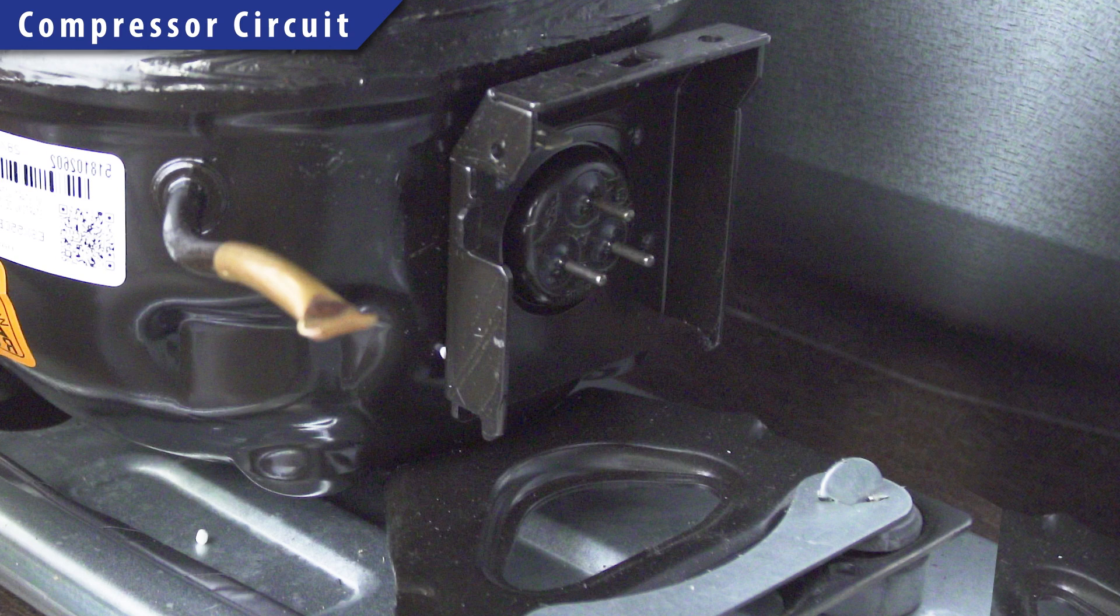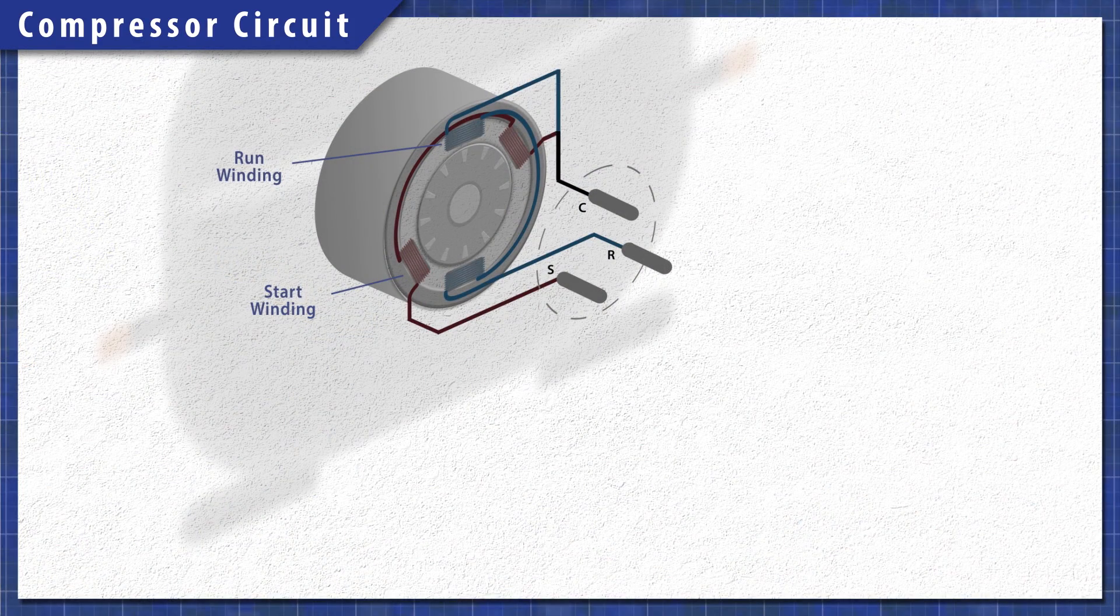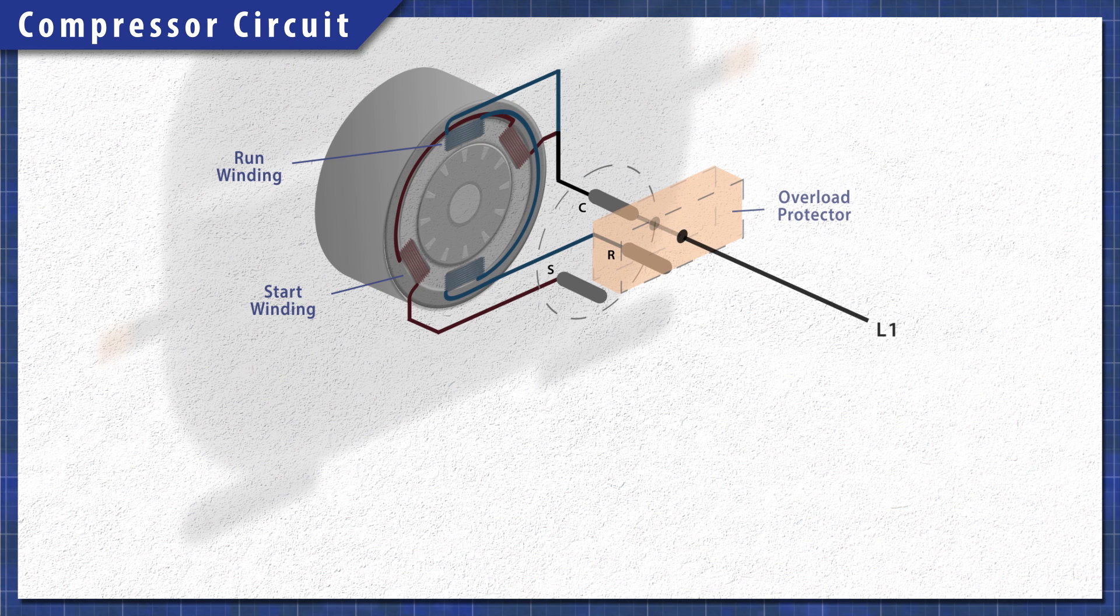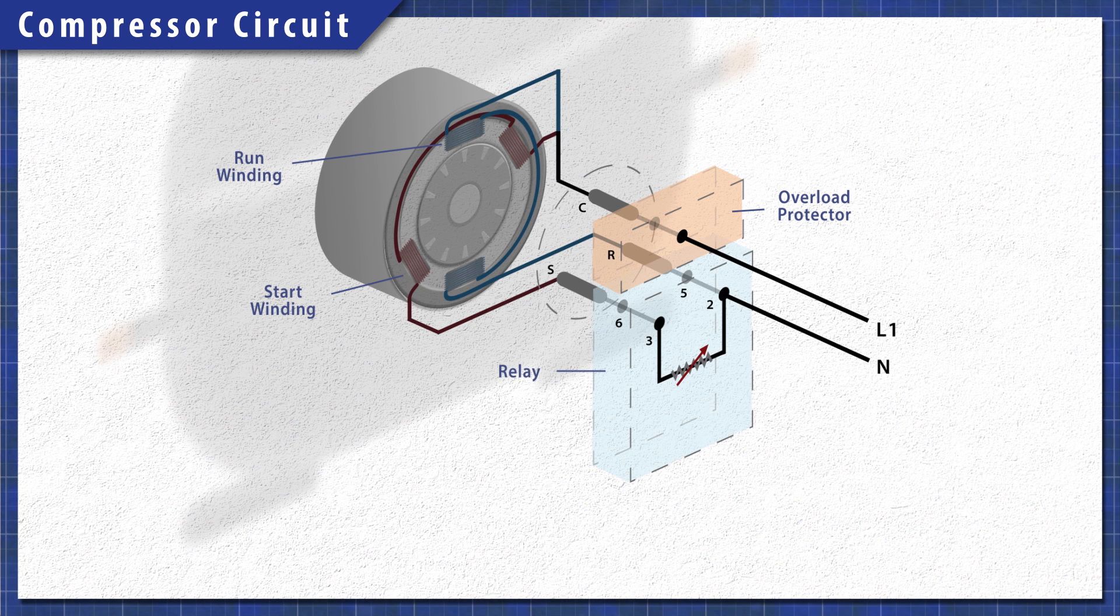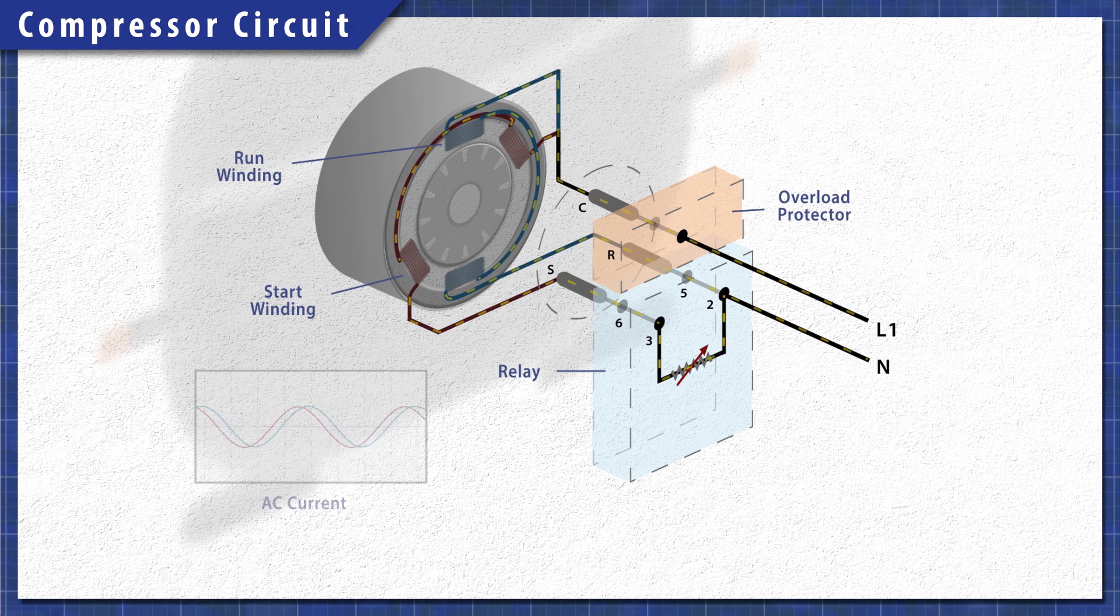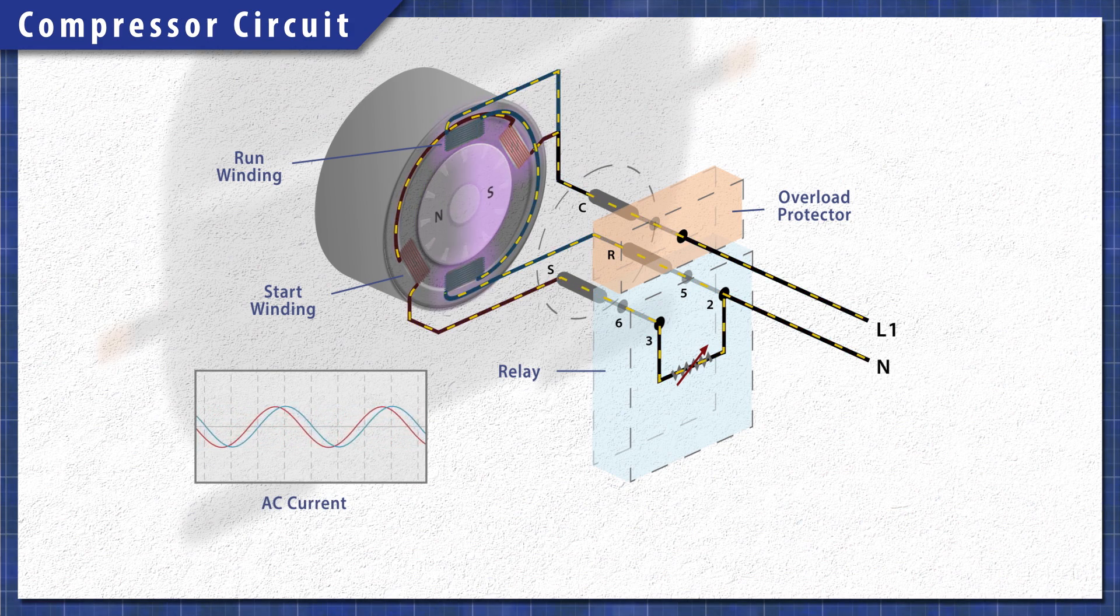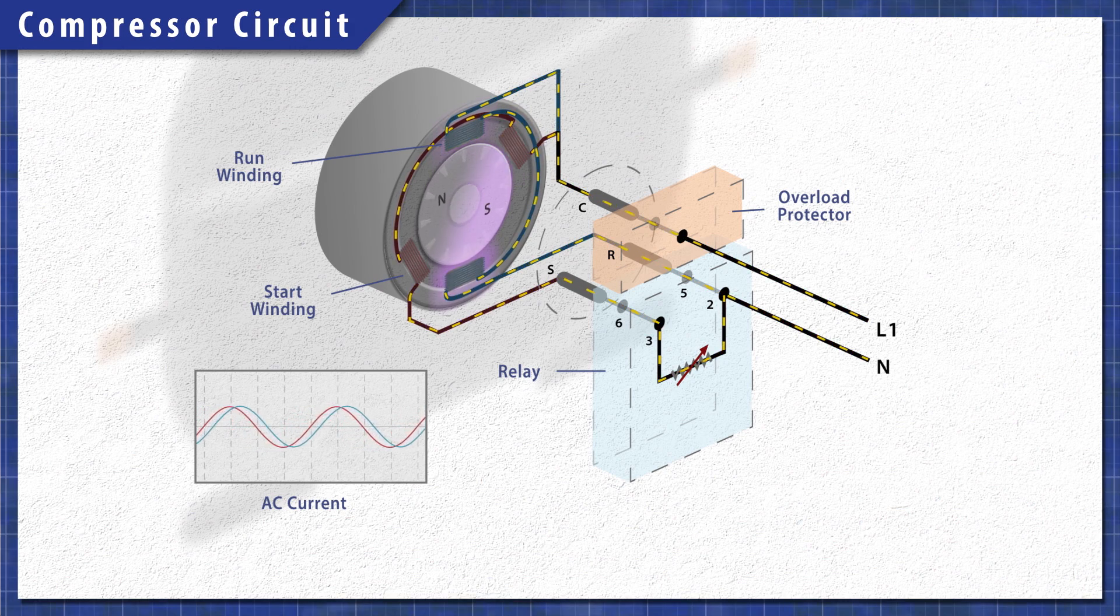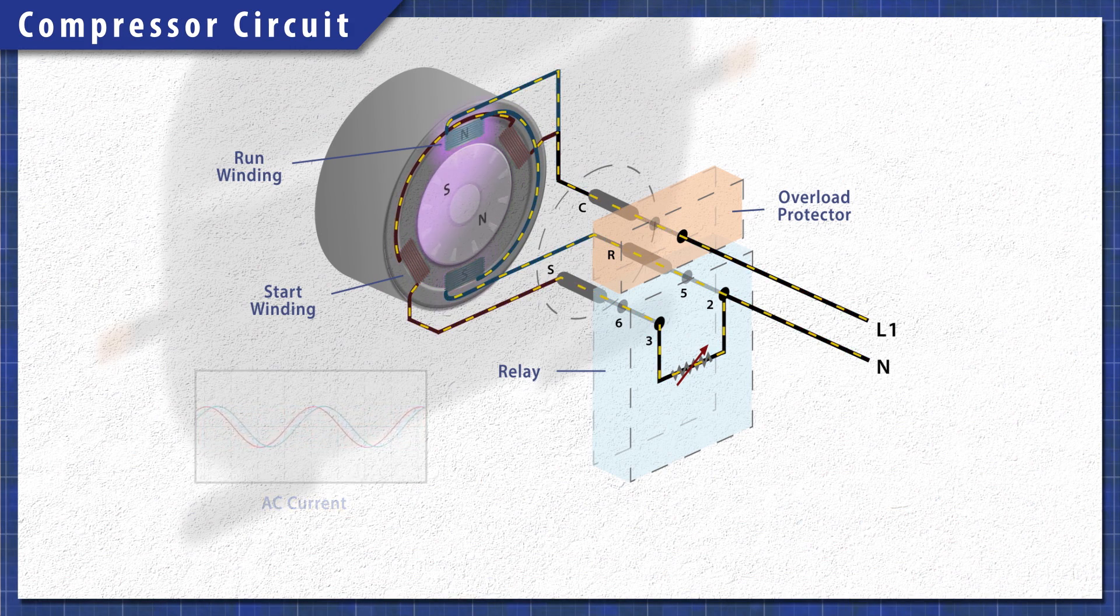The compressor uses a single phase motor. It has a start winding and a run winding which are both connected to a common terminal. Attached is an overload protector that disconnects power if the current or temperature gets too high. Single phase motors use resistance or a capacitor to create a phase shift in the start winding. This rotating magnetic field creates the torque needed to start the motor.